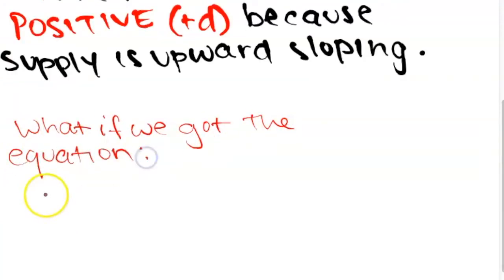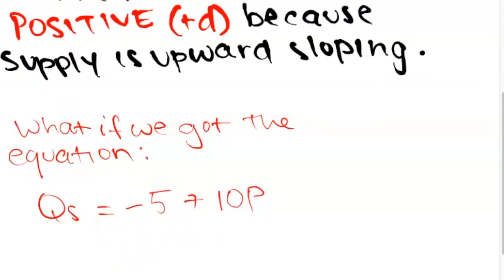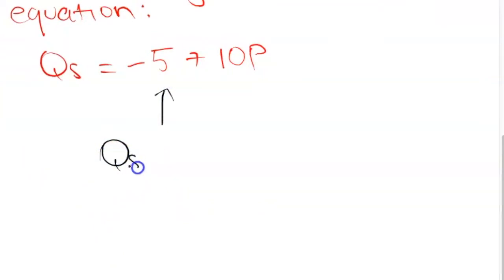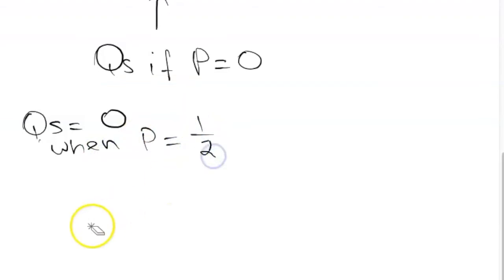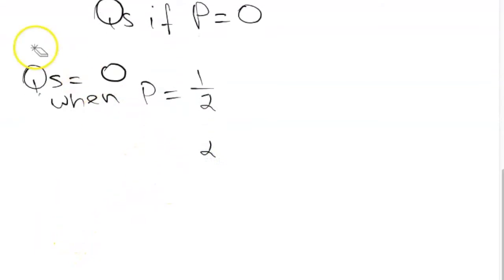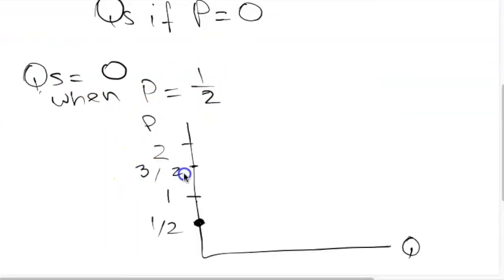If we have the equation quantity supplied equals negative 5 plus 10p, then negative 5 is the quantity supplied when price is 0. The next step is to find the price when quantity supplied equals 0: since 0.5 times 10 equals 5, and negative 5 plus 5 equals 0, when quantity supplied equals 0 the price is 0.5. The horizontal intercept is negative 5, so it lies off the positive axis.